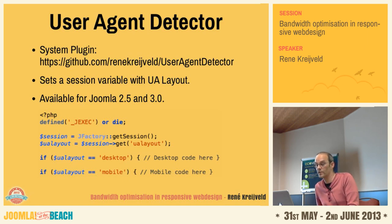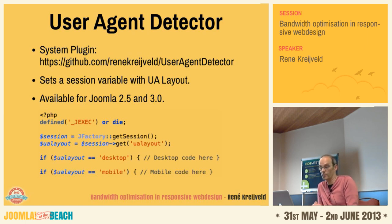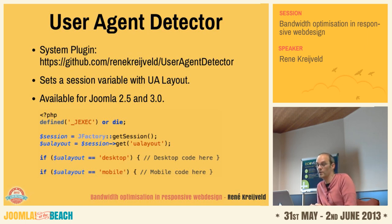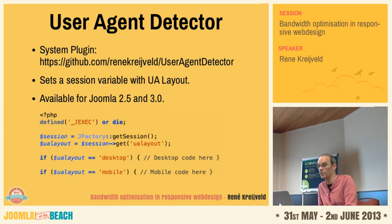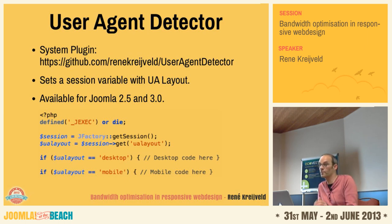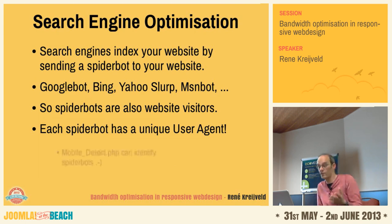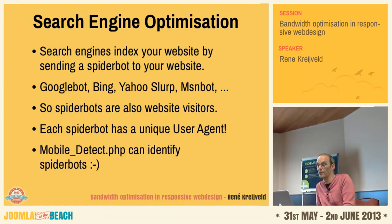The user agent layout has four possible values: desktop, tablet, mobile, or bot. The 'bot' value can be very interesting. Search engines index your website by sending a spider bot, and there are many: Googlebot, Bing, Yahoo Slurp, MSN — many spider bots. Each spider bot has a unique user agent, and the Mobile Detect PHP library can identify these spider bots. Based on this, I've created a template experiment.